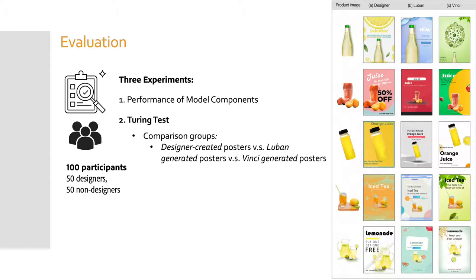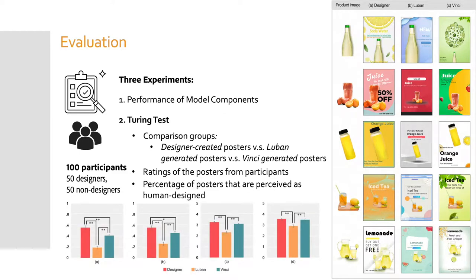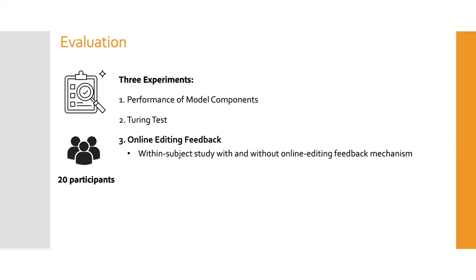In our second experiment, we assessed overall design quality by asking participants to rate designer-created posters, posters generated by a commercial state-of-the-art tool developed by Alibaba called Luban, and posters generated by Vinci, and asked whether they thought the posters were created by a human or machine. Without any doubt, posters from real designers received the highest ratings. However, we found a significantly larger percentage of Vinci posters were perceived as human-created compared to Luban, while also receiving higher ratings, indicating that our system outperforms the state-of-the-art tool.